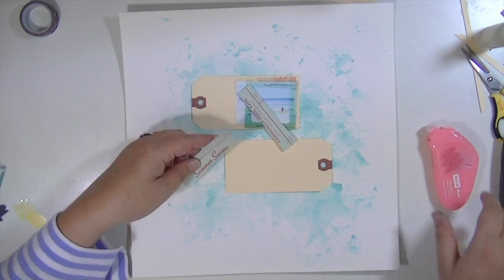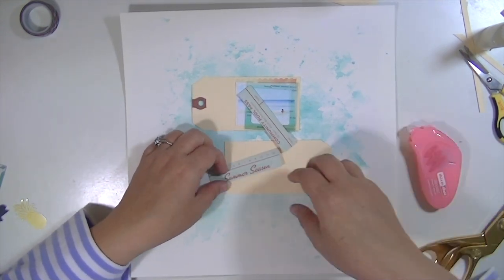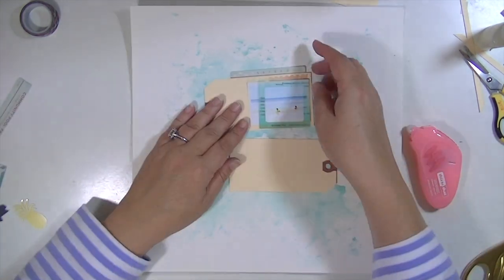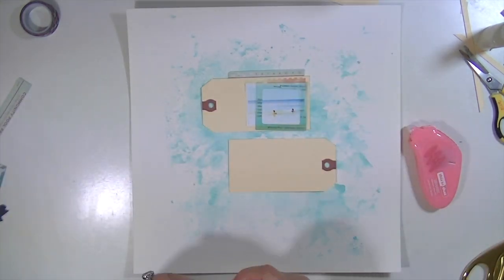Then I'm just going to take some of the ephemera pieces - I cut this one in half because I wasn't going to use it all - and stick those behind the tag.